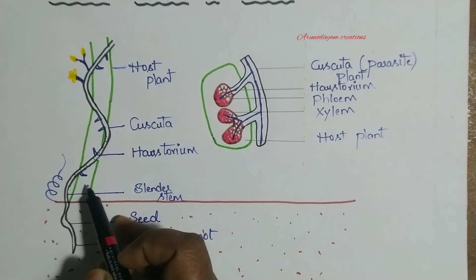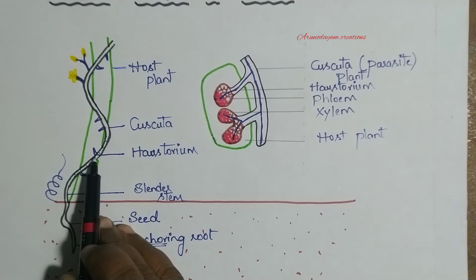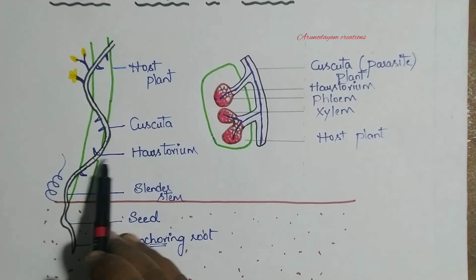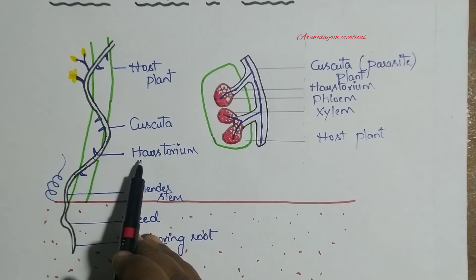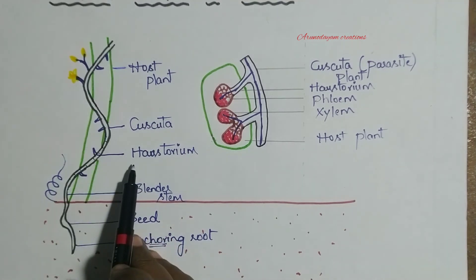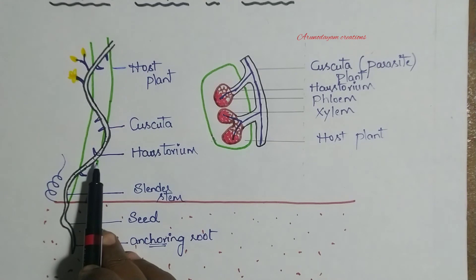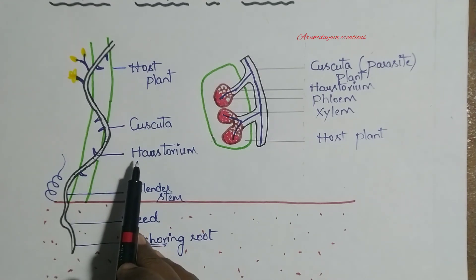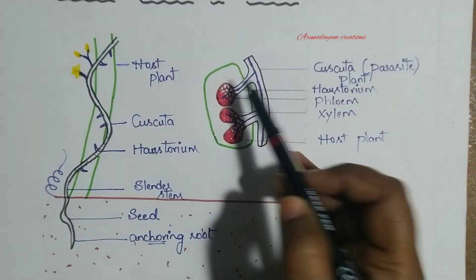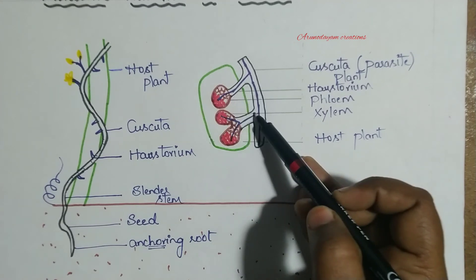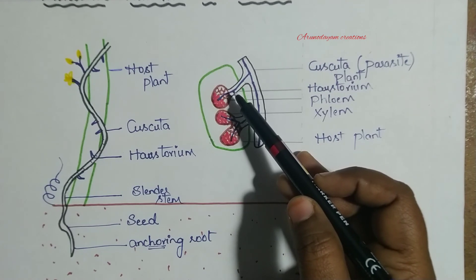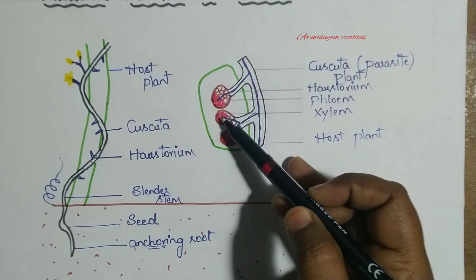Meanwhile, it produces some false root-like structures called haustoria. These haustoria will penetrate deep into the vascular tissue of the host plant.